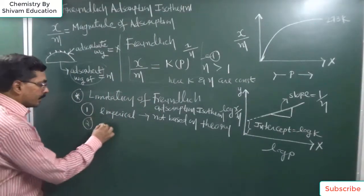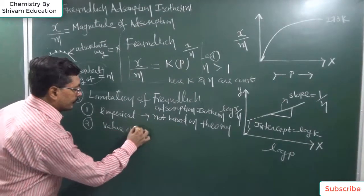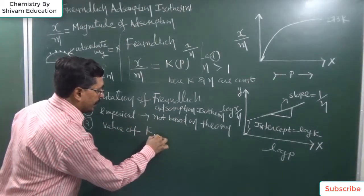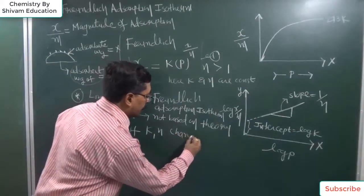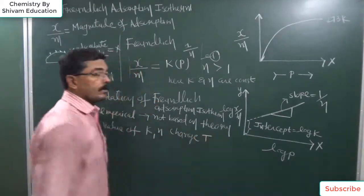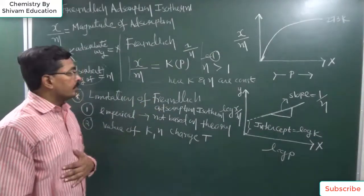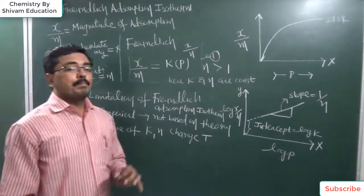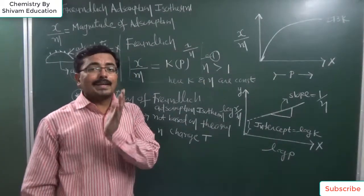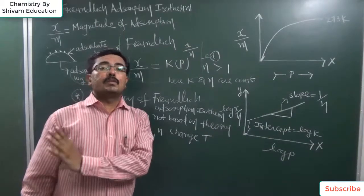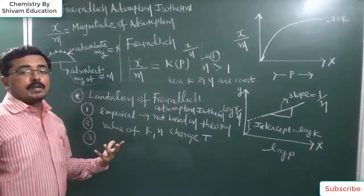The second important limitation is that the value of constants k and n change with temperature. If the temperature changes, the values of k and n will also change. Most importantly, this equation is applicable only within a certain range of pressure — particularly at high pressure, deviations are observed.